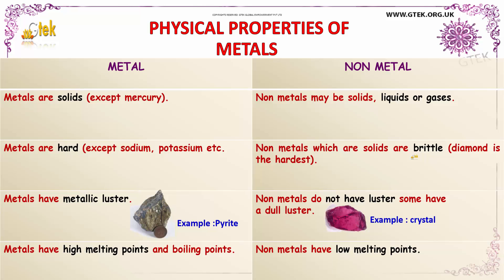Let's move on to analyzing the physical properties of metals compared to non-metals. Metals are solids, except mercury. Non-metals may be solids, liquids, or gases. Metals are hard, except sodium and potassium.